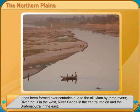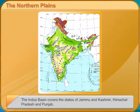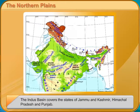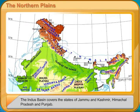The Indus has five major tributaries: Satlaj, Beas, Ravi, Chenab, and Jhelum.